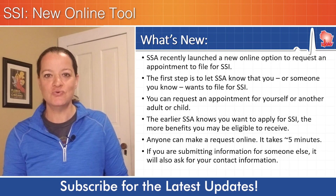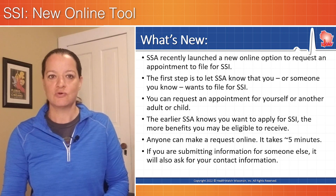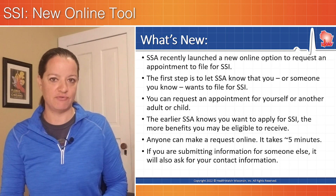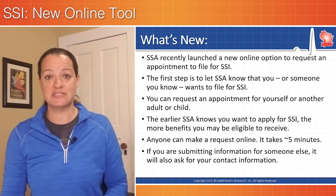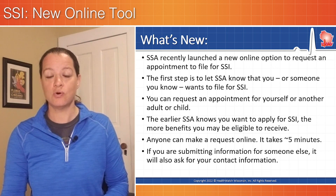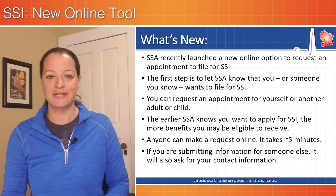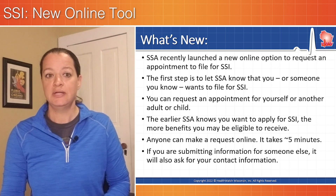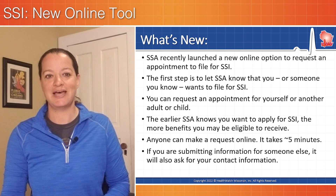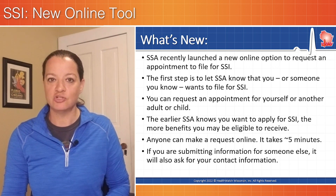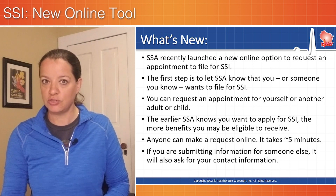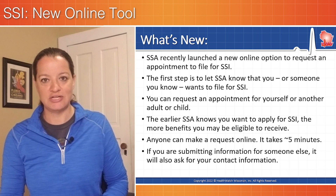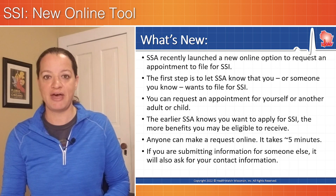What's new is this new online scheduling tool. Social Security launched their online scheduling tool as an option to request an appointment to apply for SSI. The first step is to let the Social Security Administration know that you or someone you know wants to file an SSI application. The earlier Social Security knows you want to apply for SSI, the more benefits you may be eligible to receive. So getting the process started earlier was important. Anyone can make the request online, and Social Security tells us it takes just about five minutes to do so.